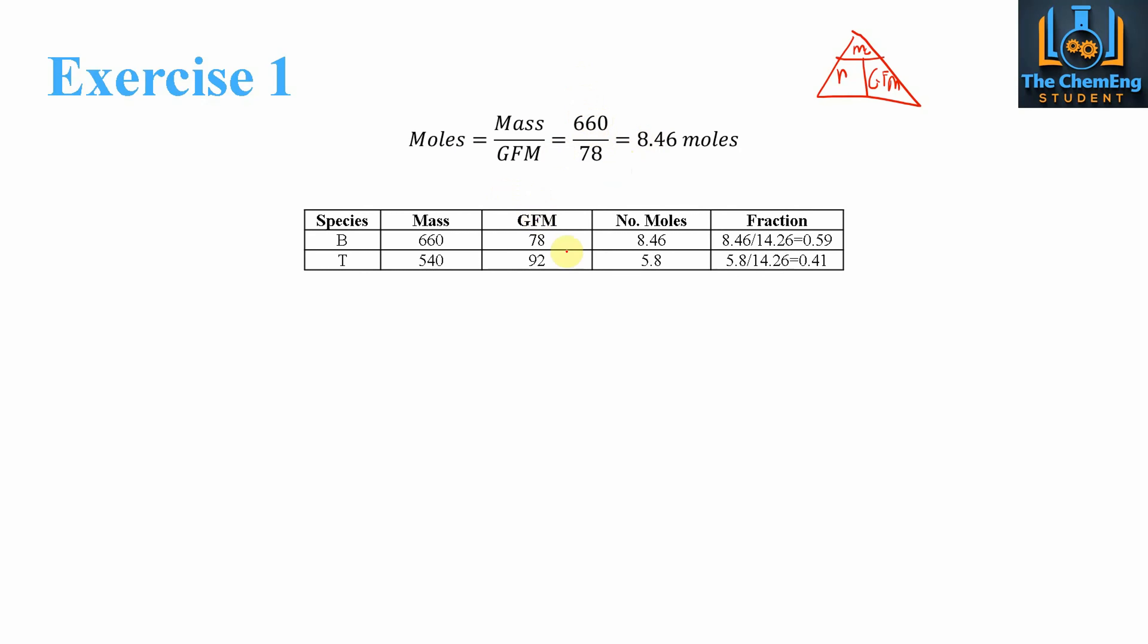Now this is just a sample calculation in order to show how we work out the mole fraction of our system. So this is for the feed. So we know that if we balance species B, then our mass is 660, we have our GFM, and we have our number of moles. Then what we can do is do the same thing for toluene. So that would be 540 divided by 92. That will give us a number of moles of 5.8. Now if we add these values together, we get 14.26. So then we divide our respective moles by the total, and that will give us 59% benzene and 41% toluene.